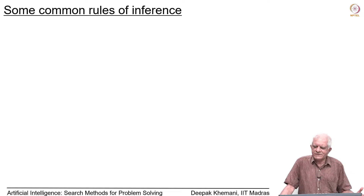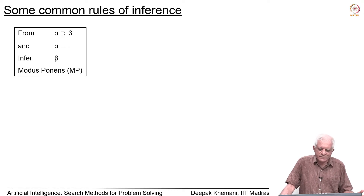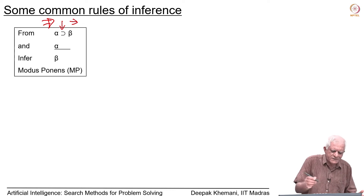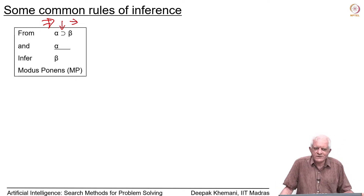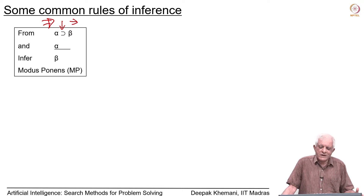Here are some common rules of inference that you would have studied in logic. The most common is called modus ponens. It says that if you are given two statements — one statement is alpha implies beta (that symbol should be read as 'implies') — and if you are given alpha, then you can go ahead and add beta to the knowledge base.